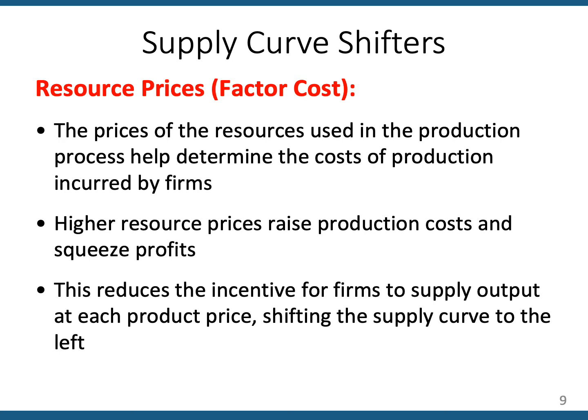The first and most obvious supply curve shifter is changes in resource prices. Businesses, in order to produce their products and bring them to market, take on resource costs — they have to purchase or pay for the use of resources. If one of the key resources you have to pay for rises, then it's more costly per unit to produce your product. You're going to want to produce less of it at any given market price, and so are your competitors. So if resource prices rise, that will lead to a decrease in overall supply. If resource prices go down, it's less expensive per unit to produce, and that will lead to an increase in overall supply.